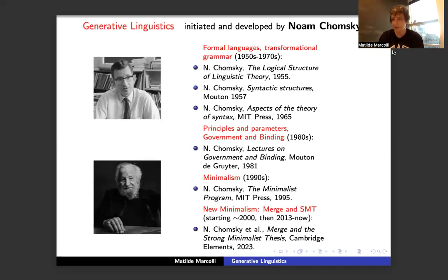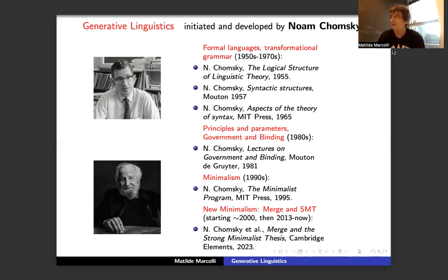By generative linguistics I mean the field that was initiated and developed by Chomsky over a long stretch of time, basically starting at the end of the 1940s, mostly the 1950s, and continuing until the present day. There was a long series of major milestones and breakthroughs starting from the 1950s — results related to formal languages, the famous Chomsky hierarchy, and notions of transformation on grammars.